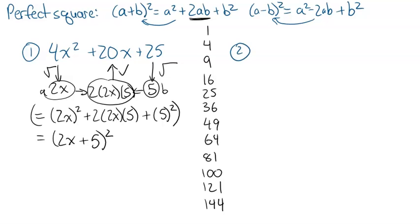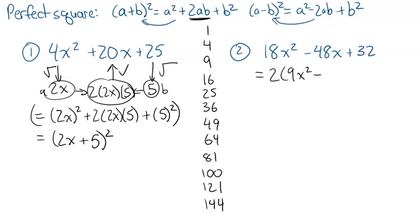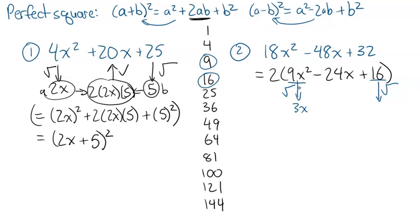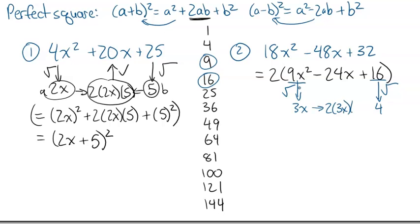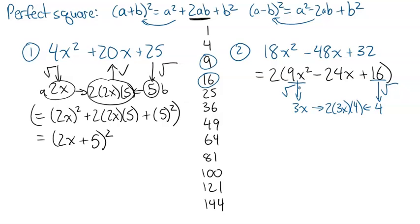Here's a second example: 18x squared minus 48x plus 32. At first glance, that doesn't look like a perfect square, and it looks like we have to find two numbers that add to negative 48 and multiply to 18 times 32. But the first thing we should always do when we factor is try to take a common factor out. If I take a 2 out of all of them, I get 9x squared minus 24x plus 16. Now we should start recognizing things — 9x squared and 16 are both perfect squares. Taking their square roots: square root of 9x squared is 3x, square root of 16 is 4. Checking: 2 times 3x times 4 gives 24x. It works.